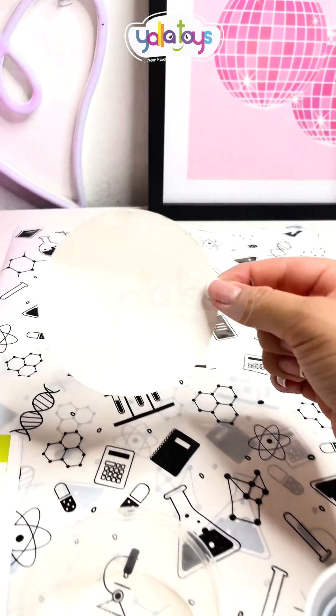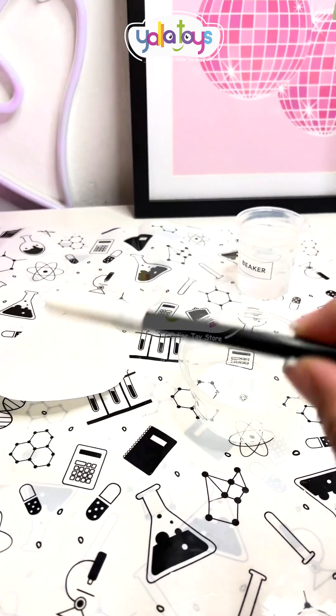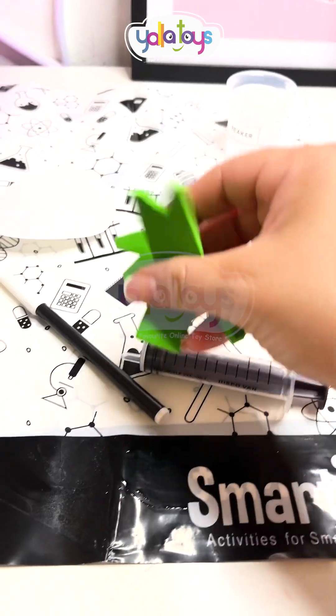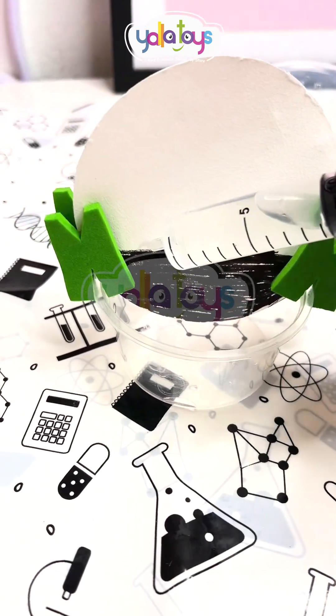So from the kit, of course I'll need the filter paper, a cup, some water, a black pen, a syringe, and some clips. Now I'm going to put my filter paper right here. I'm going to start adding some water.